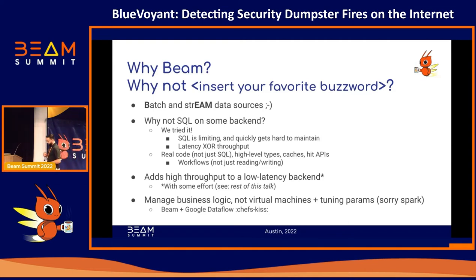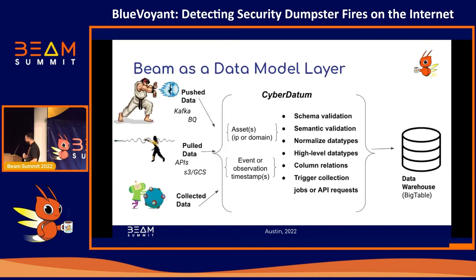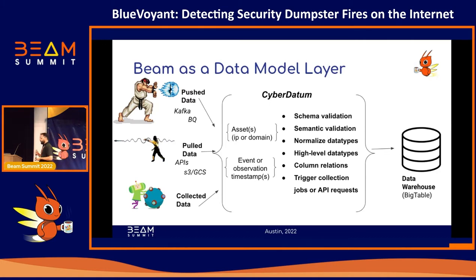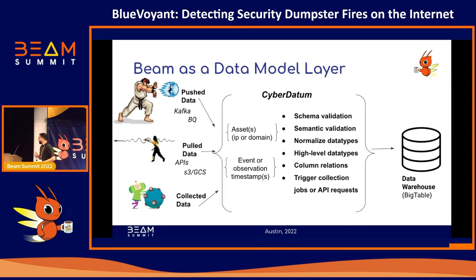Beam also allows us to add high throughput to what might otherwise be a low-throughput but low-latency backend, because we can issue tons of tiny queries from tons of workers. We really like that we can manage business logic in Beam — we don't have to deal with a lot of tuning parameters the way you do with Spark or Hadoop. Beam plus Google Dataflow has been really great. Because we can do everything in terms of code and transform all our disparate data sources into common objects, it actually serves as a data modeling layer and a data integration layer. We created this idea of a 'cyberdatum' — then we can do semantic validation, schema validation, quality control on ingest, trigger different workflows, do API requests, pretty much anything in a workflow environment.